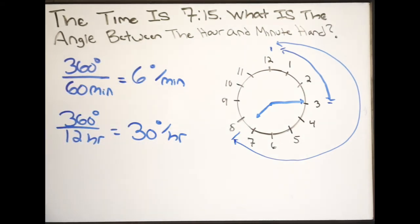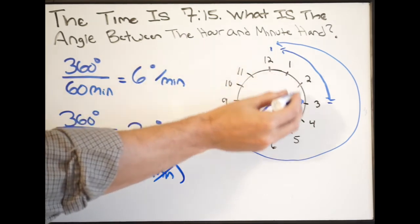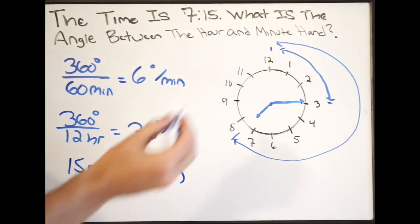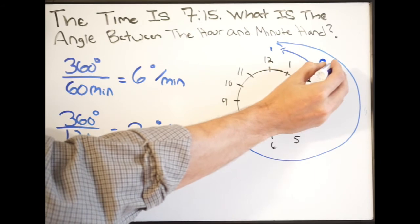So how are we going to find this angle first, going from 12 to 3, looking at the minute hand? Well, we know there are 6 degrees per minute. So all I have to do here is do 15 minutes times 6 degrees per minute. When I do this, you'll see that minutes cancel out and I'm left with degrees. And that will give me the angular measure here. So if I do 15 times 6, it gives me 90 degrees. And that makes sense, that's definitely a 90 degree angle.